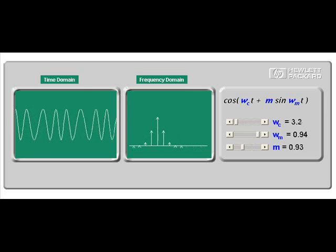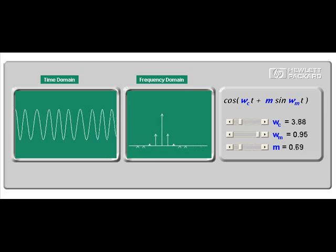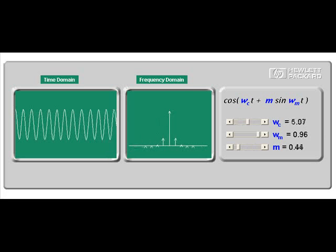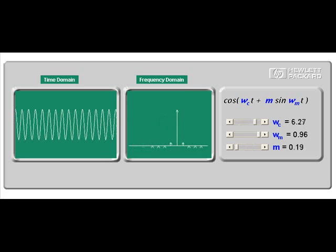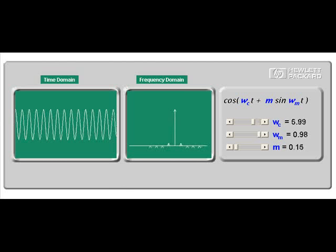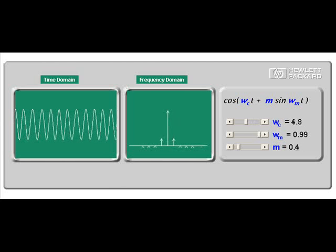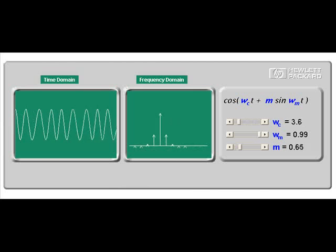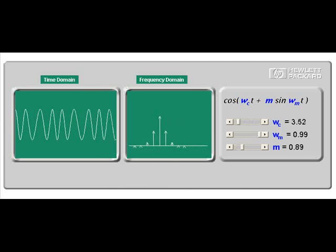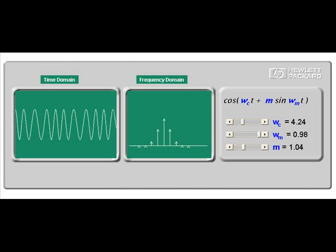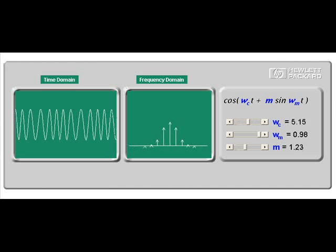The figure labeled frequency domain shows the carrier and sideband components as a plot of amplitude versus frequency. Shown here in the frequency domain is only the significant components, since we have an infinite number of higher order components that have negligible amplitude.